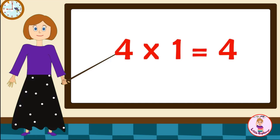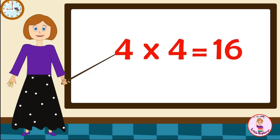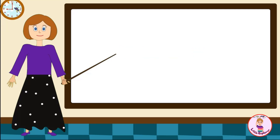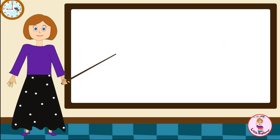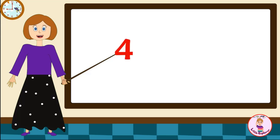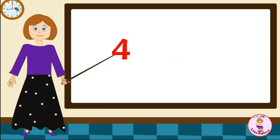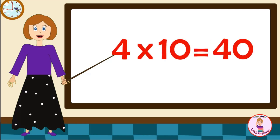Four-two's are eight. Four-three's are twelve. Four-four's are sixteen. Four-five's are twenty. Four-six's are twenty-four. Four-seven's are twenty-eight. Four-eight's are thirty-two. Four-nine's are thirty-six. Four-ten's are forty.